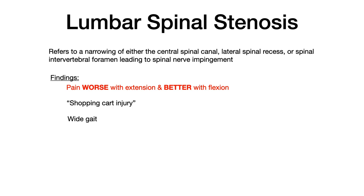Lumbar spinal stenosis refers to a narrowing of either the central spinal canal, the lateral spinal recess, or the spinal intervertebral foramen — in all cases causing spinal nerve impingement. The very high yield finding is pain that's worse with extension of the spine but better with flexion. Because of this, lumbar spinal stenosis is sometimes referred to in questions as the 'shopping cart' sign — patients prefer to flex their lumbar spine and bend forward, opening up those areas of nerve impingement, so they look like they're pushing a shopping cart.